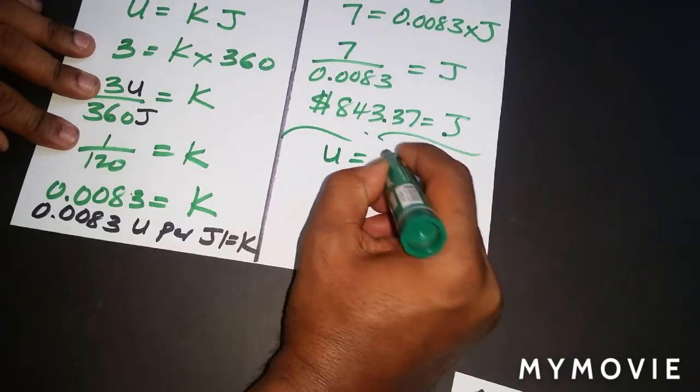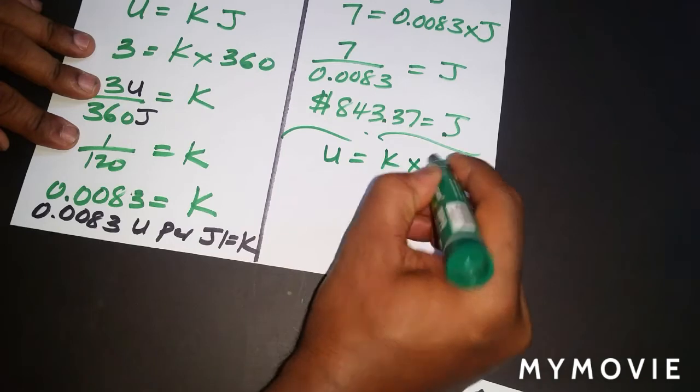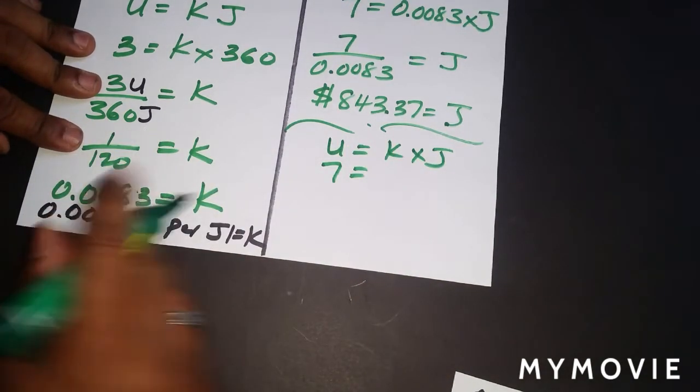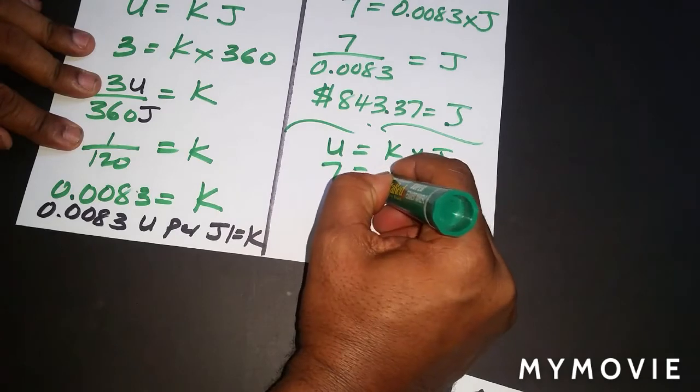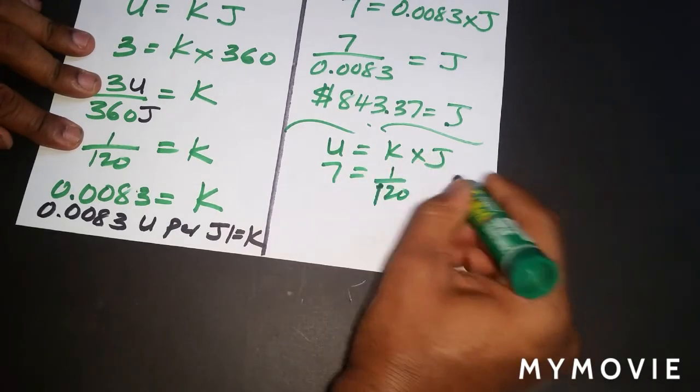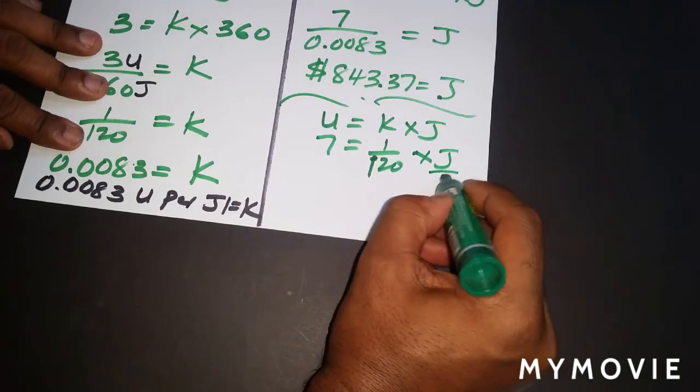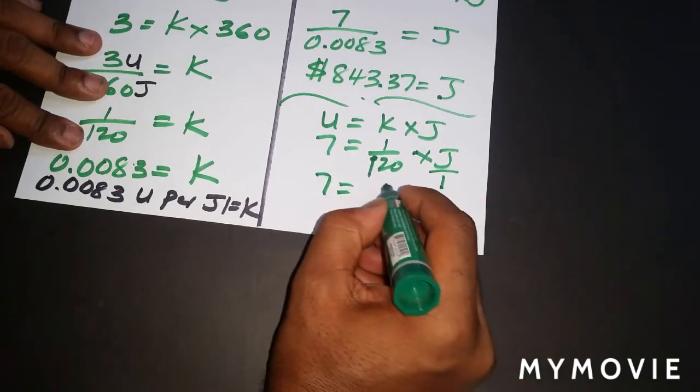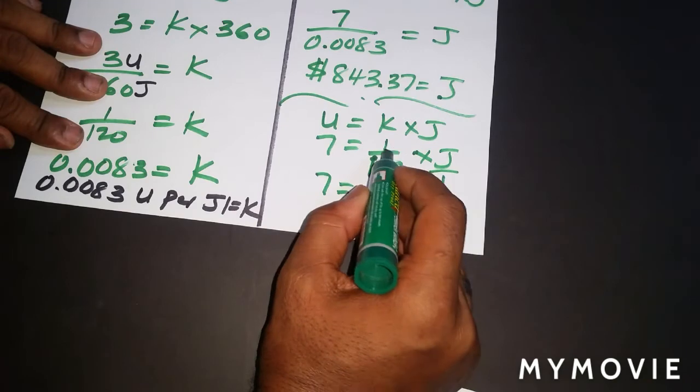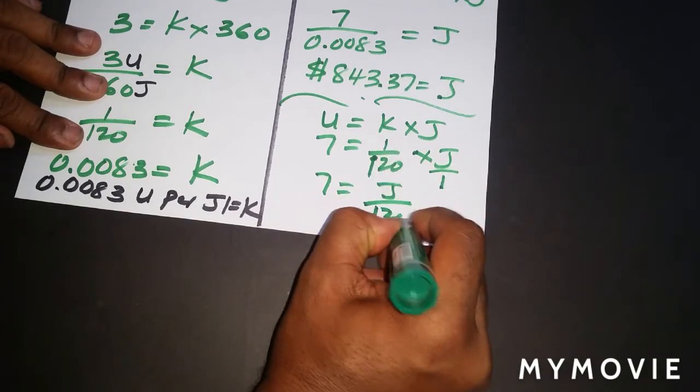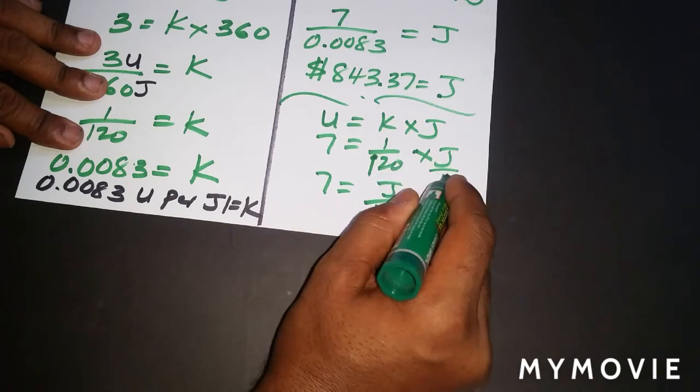So U equals K times J, 7. And remember, I'm using this now, 1 over 120, instead of the decimal. So 1 over 120 times J, which is same as J over 1. So 7 equals, when I'm multiplying fractions, 1 times J is J, 120 times 1 is 120, numerator times numerator, denominator times denominator.